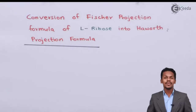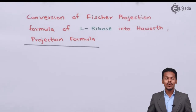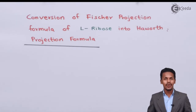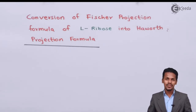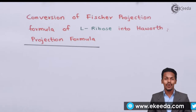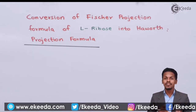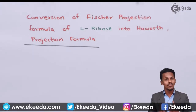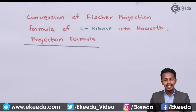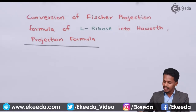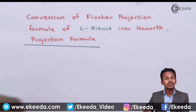In the previous topic we discussed the conversion of D-ribose, and now in this topic we are going to talk about the conversion of the L-ribose Fischer projection formula to Haworth projection formula. The only difference we could find is the position of the OH group.